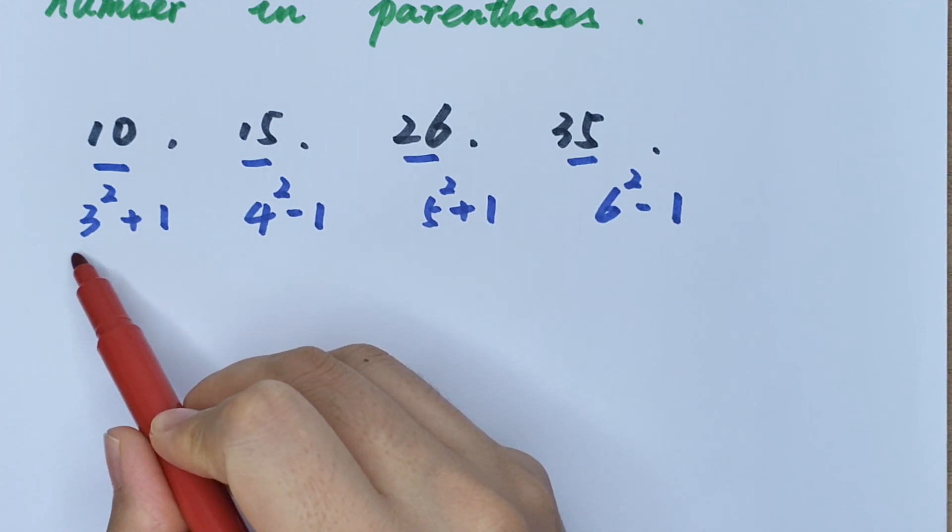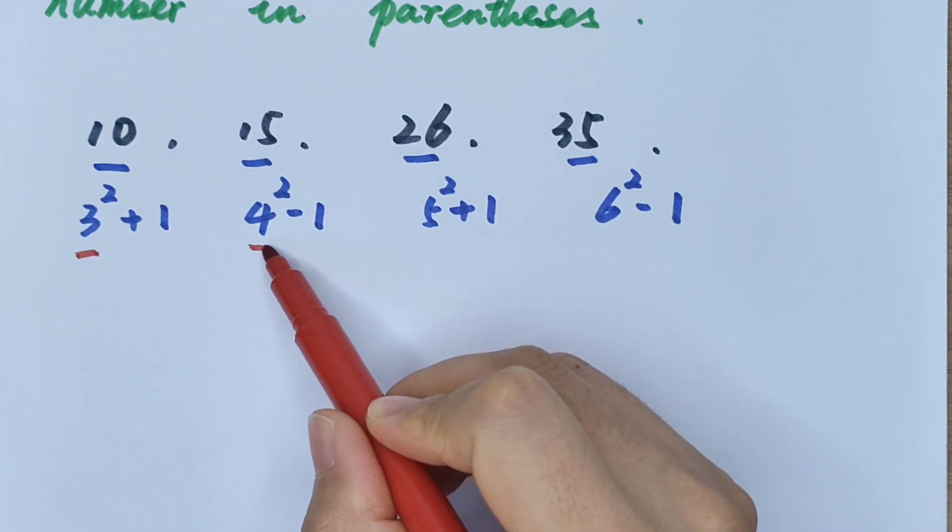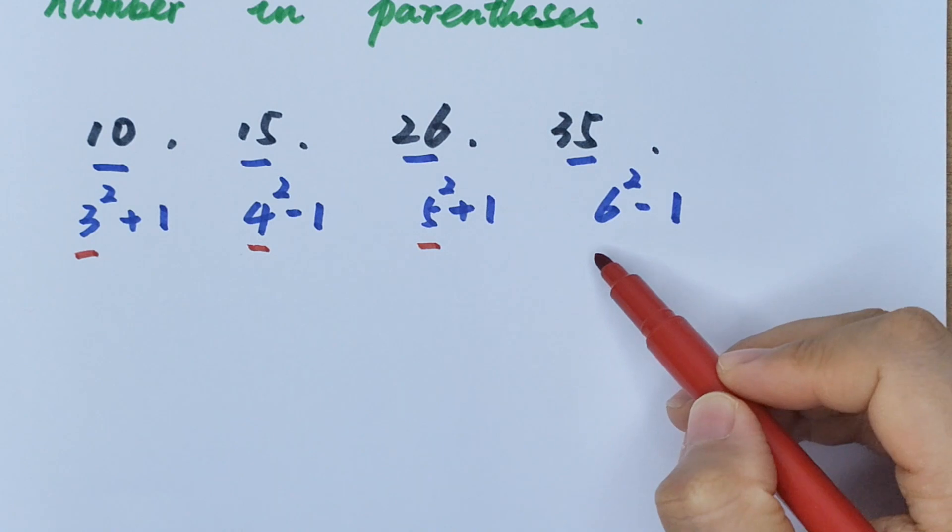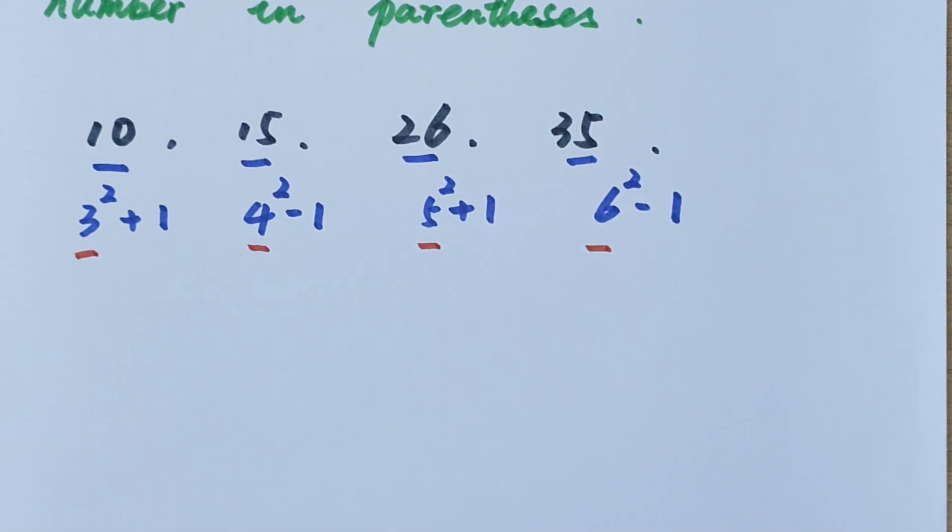Here is 3 squared, 4 squared, 5 squared, and 6 squared. Then here is 7 squared.